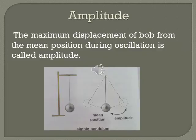Amplitude. What is amplitude? The maximum displacement of a bob from the mean position during an oscillation is called amplitude. In the diagram, you have seen a simple pendulum. A simple pendulum can be made by hanging a bob on a length of string. Pull the bob to one side and release it. When the bob is released, it begins to oscillate. The maximum displacement of the bob from the mean position during oscillation is called amplitude.